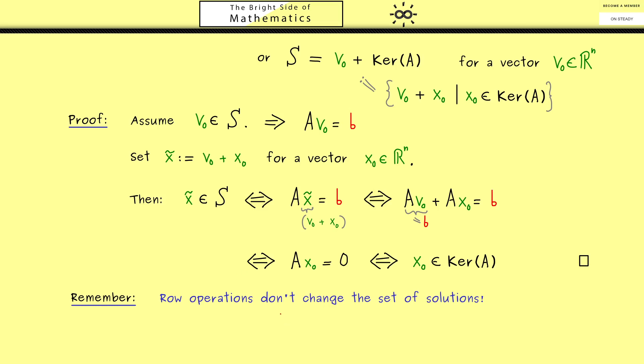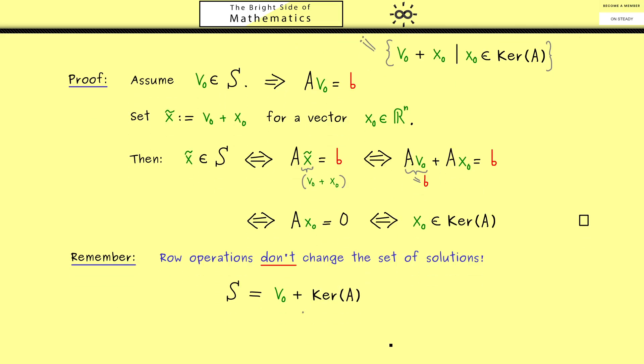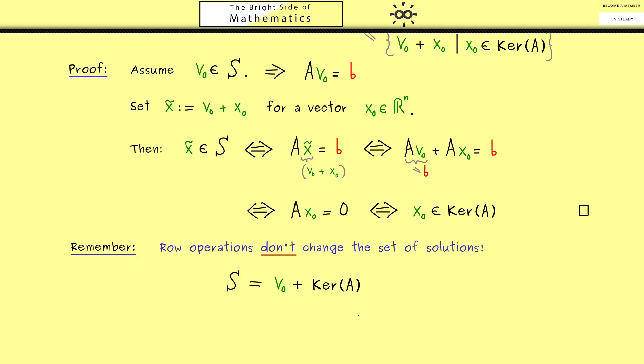Indeed, there is no huge proof needed for this fact, because we already know everything. For example, we already know that we don't change the kernel of A with row operations. In fact, every invertible matrix M from the left will not change the kernel of A.